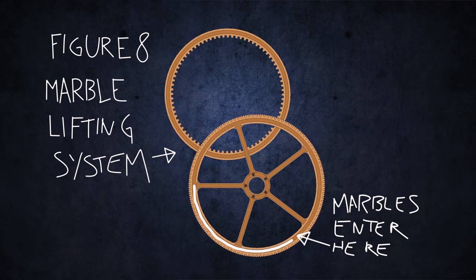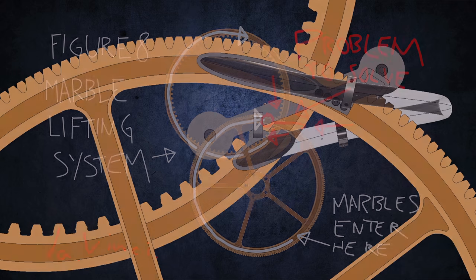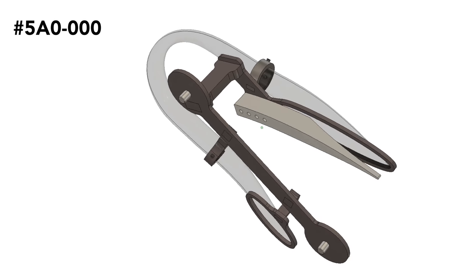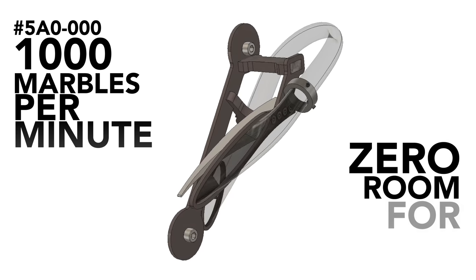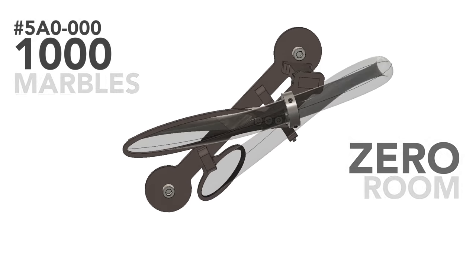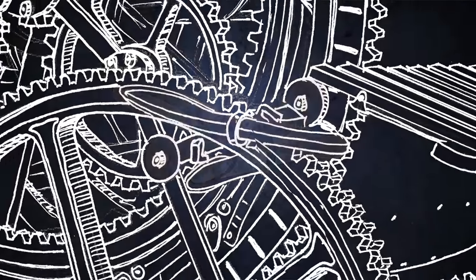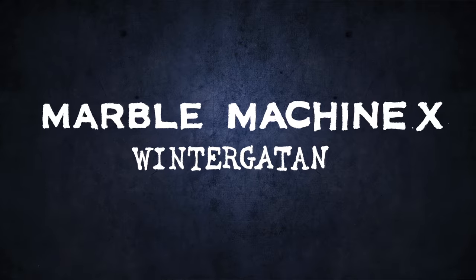The marbles will be lifted up by hidden magnets inside these two plywood gears, and I need to make a connection that will pick up the marbles from the lower gear and drop them off in the higher gear. This connection needs to transfer over a thousand marbles per minute with zero room for error. So the 5A0000 sub-assembly plays a crucial part in this mechanical music instrument that I'm trying to build, the Marble Machine X.